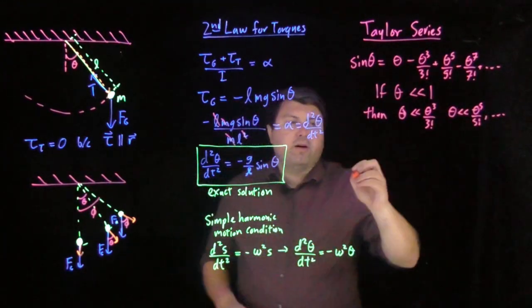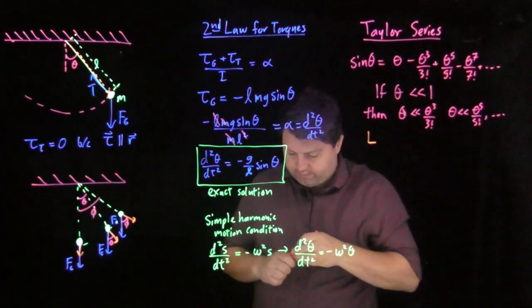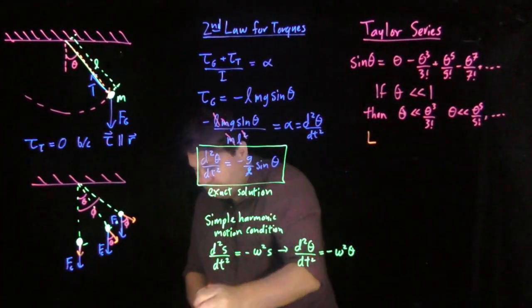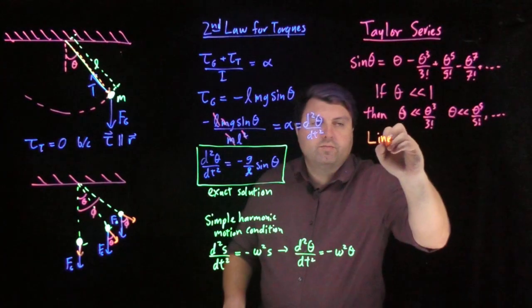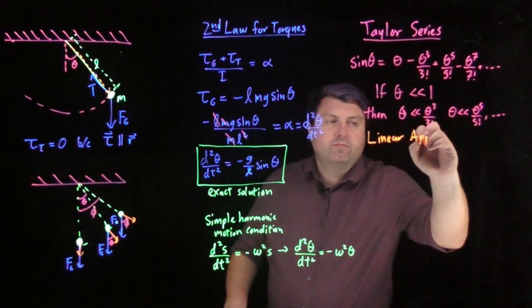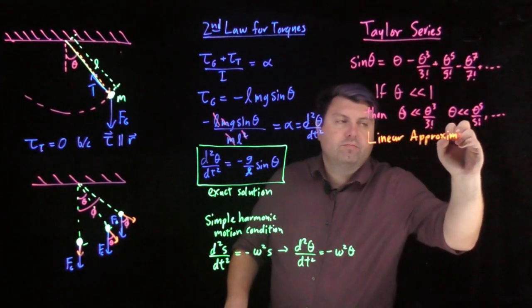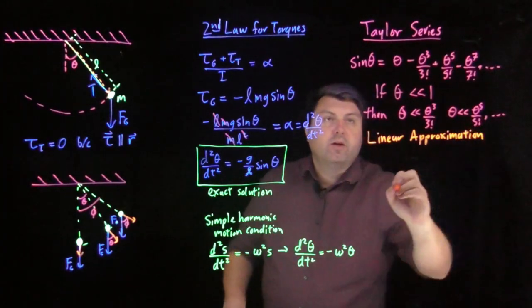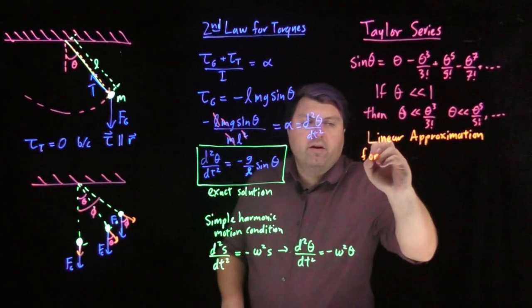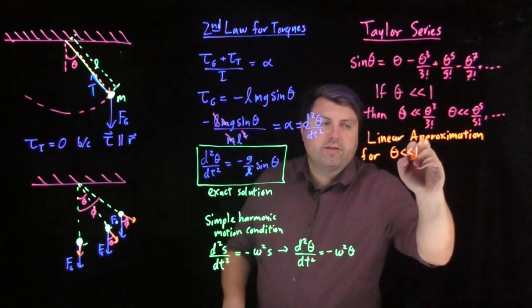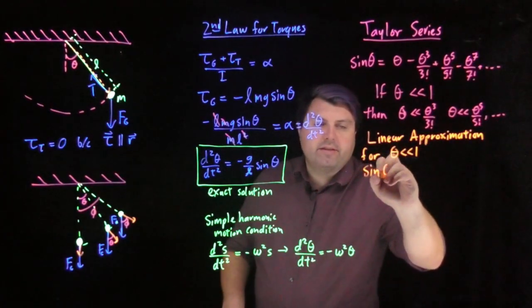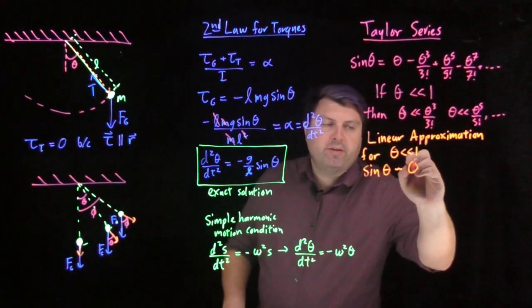So what we call this is we call this a linear approximation. We are going to say for theta much, much less than one, that sine of theta is approximately equal to theta.